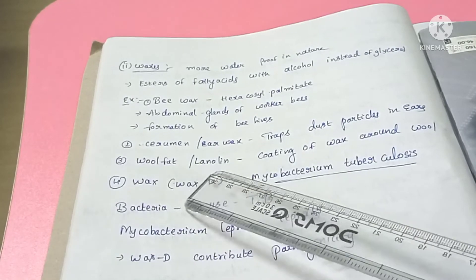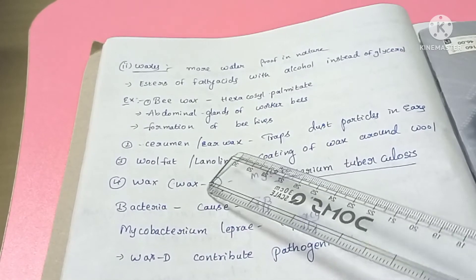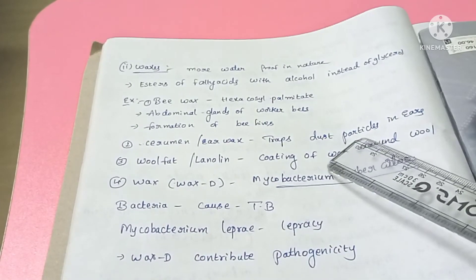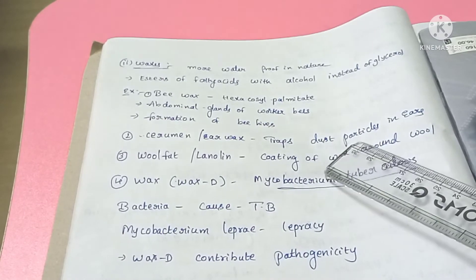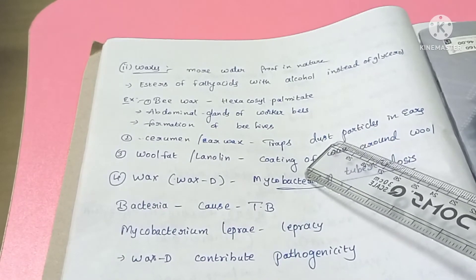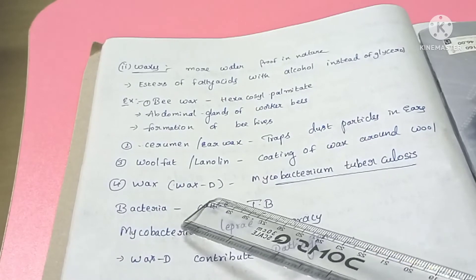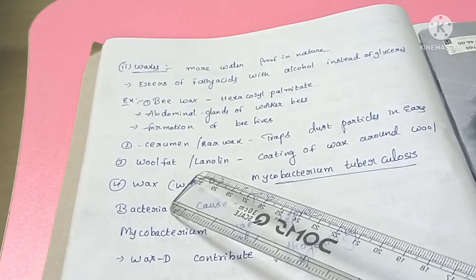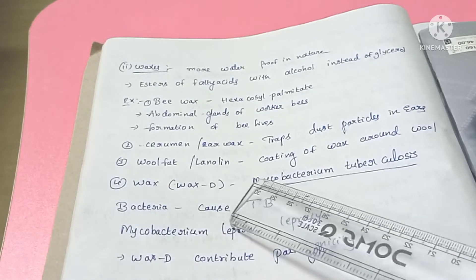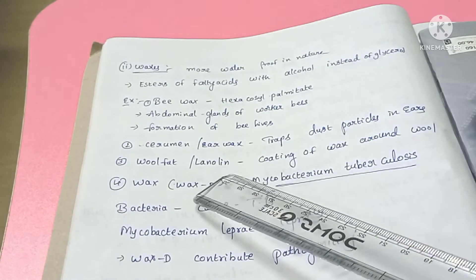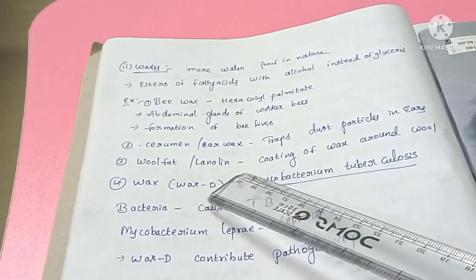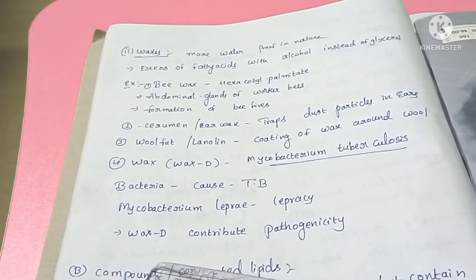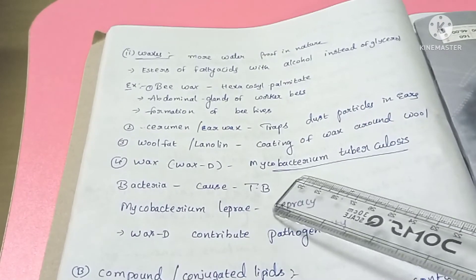Another example of wax is cerumen — earwax. Earwax functions to prevent the entry of dust particles, bacteria, and germs into the ears. Oil on the skin surface also acts as a water absorber and provides protection.